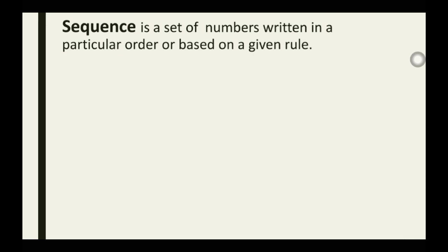Most sequences are written with commas separating the numbers. So let's take a number like this: 1, 3, 5, 7, 9... The dots following the numbers show that the sequence is an infinite sequence — that is, the last member of the sequence cannot be found. The sequence keeps increasing; it keeps moving on, so we can keep adding terms to the sequence.